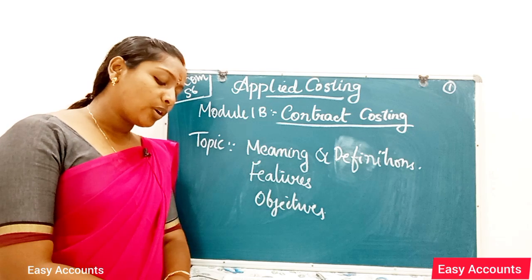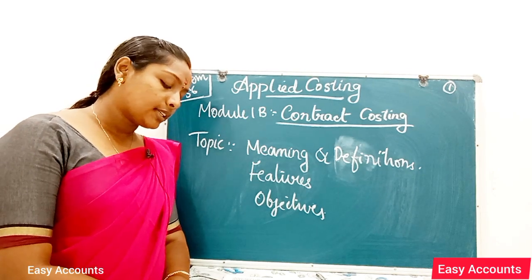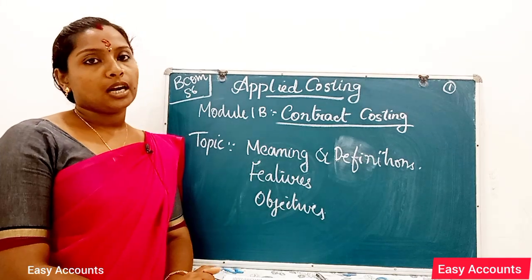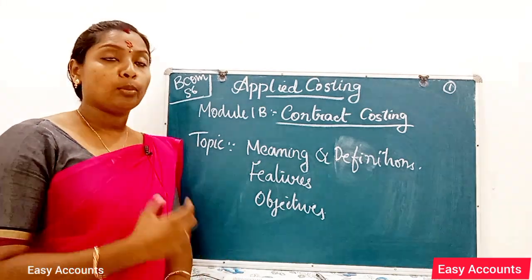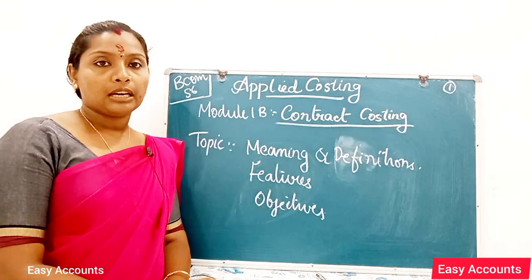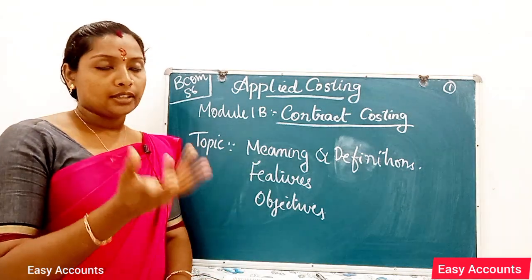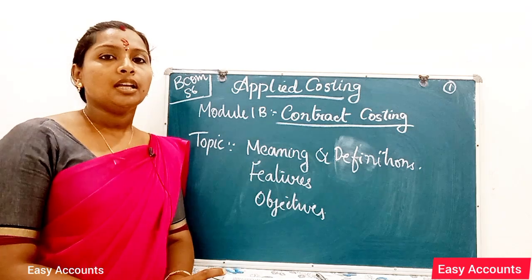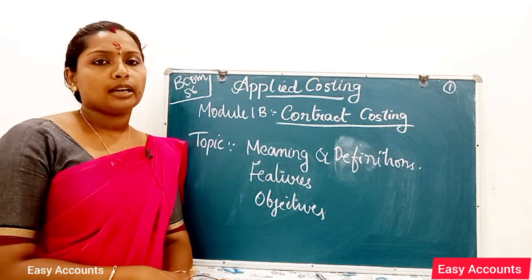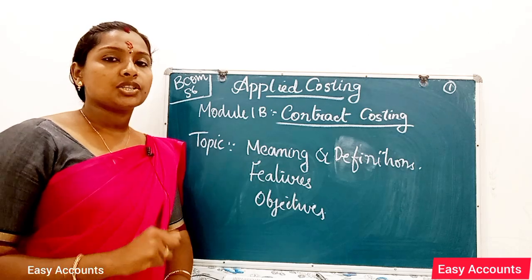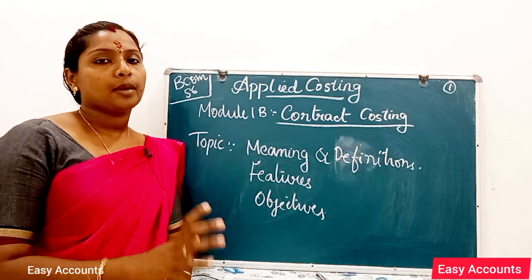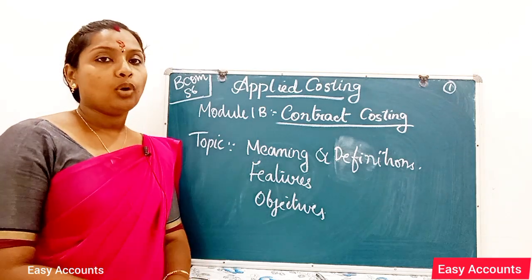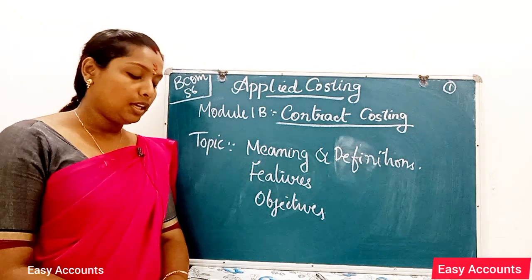Usually a large number of contracts are undertaken by a contractor at a time. The number of contracts depends on the size of the organization — a small construction company will have a smaller number of contracts.